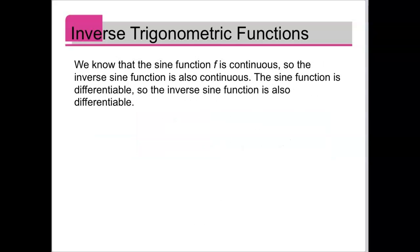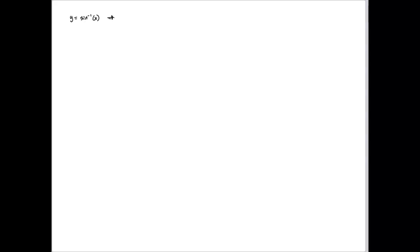Once we know that, we can find the derivative of inverse sine. I'll define y as inverse sine of x, and I'd like to figure out what y-prime is. If y equals inverse sine of x, notice that y is an angle and x is a value. That means equivalently, sine of y must equal x, because sine is the inverse — it swaps the input and output. Then I differentiate both sides with respect to x.